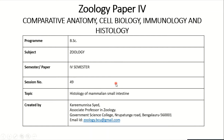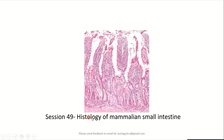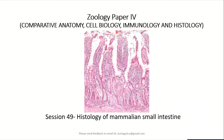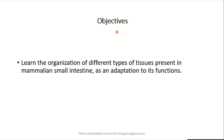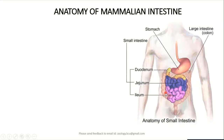Hi students, this is Karim Nisha Sayer, associate professor in zoology. Welcome back to session 49. In this session we are going to learn histology of mammalian small intestine under zoology paper 4. When we learn the organization of different types of tissue layers present in mammalian small intestine, we are going to appreciate its adaptations to its functions.